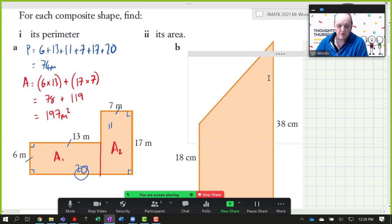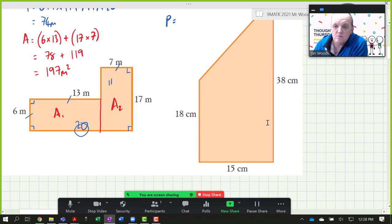For part B, the perimeter, again, what we want to do is we want to add up the sides. Now, we've got four sides. We know three of them, the 15, the 18, and the 38, but we don't know the length of this side, and this is where Pythagoras comes in.